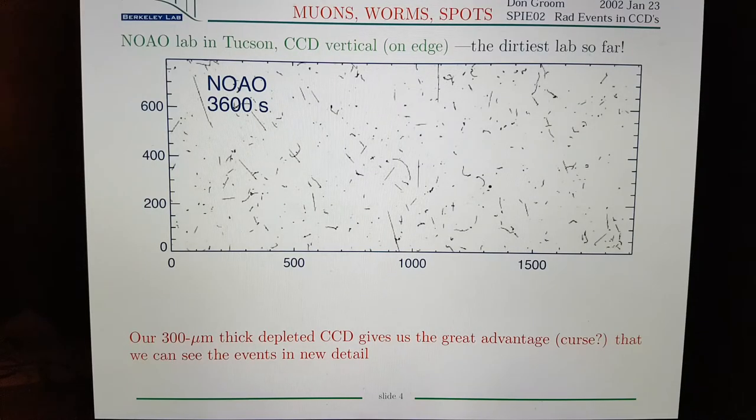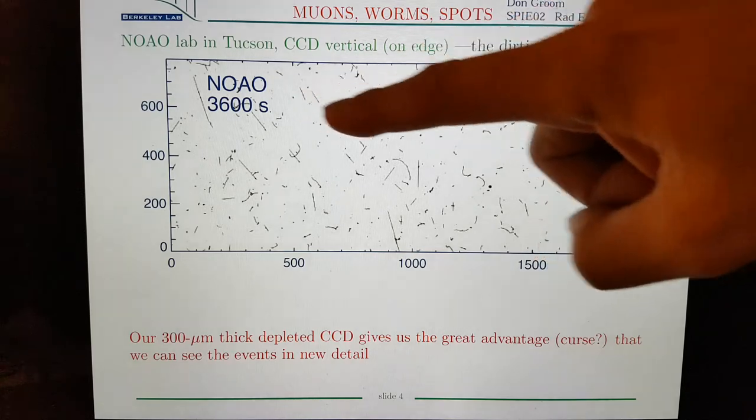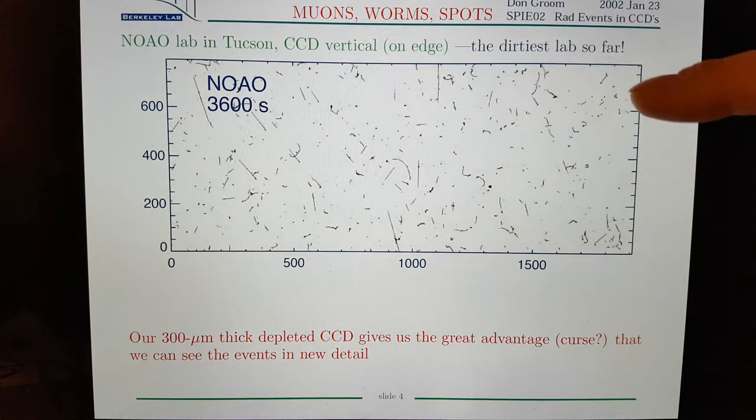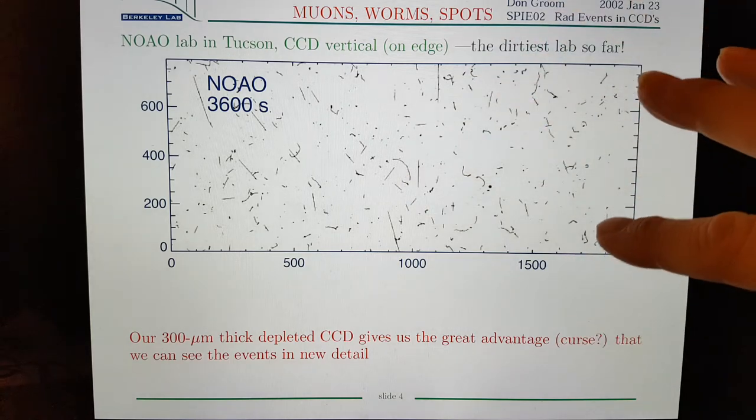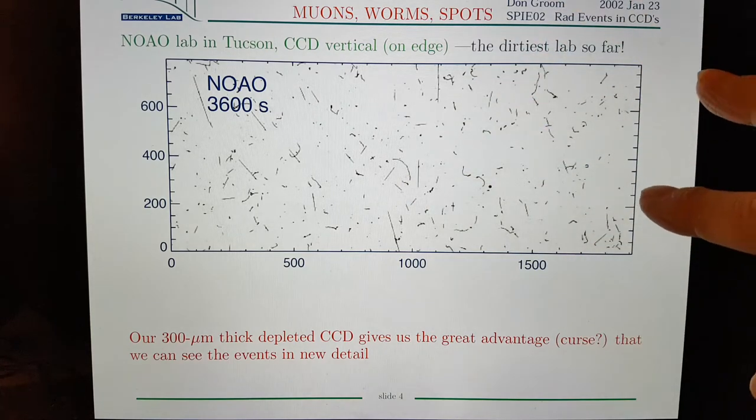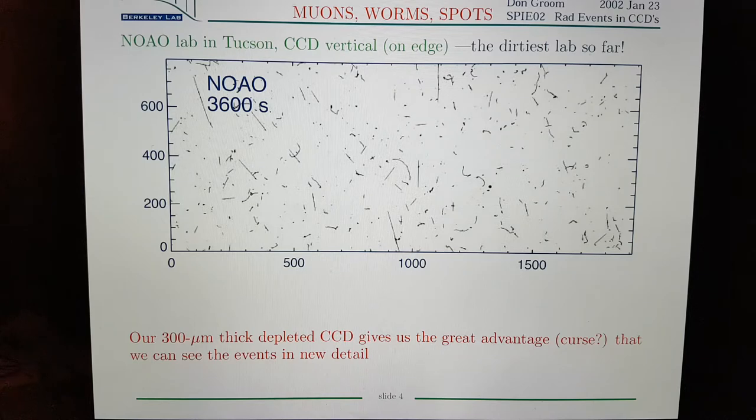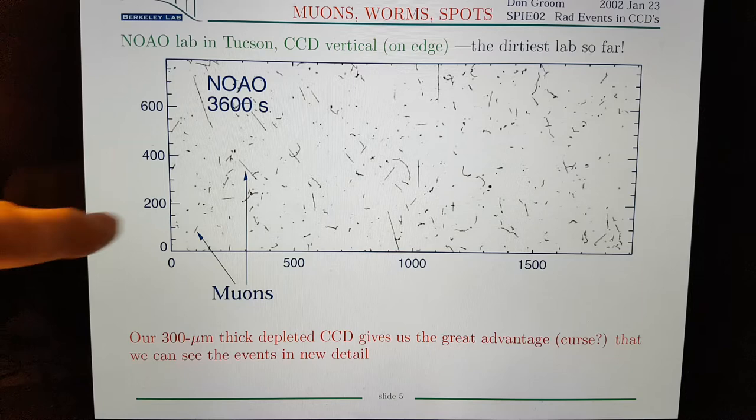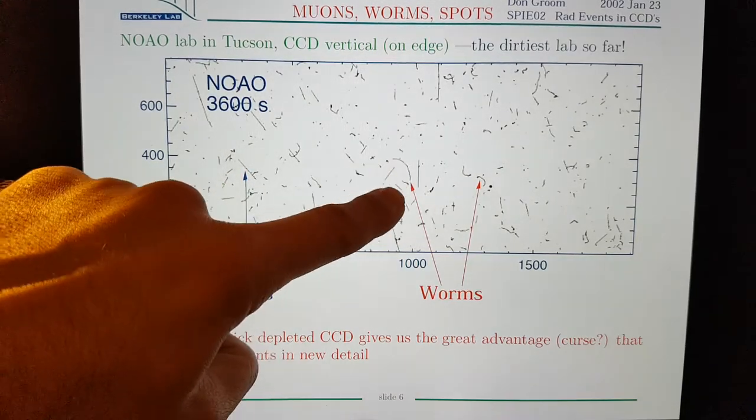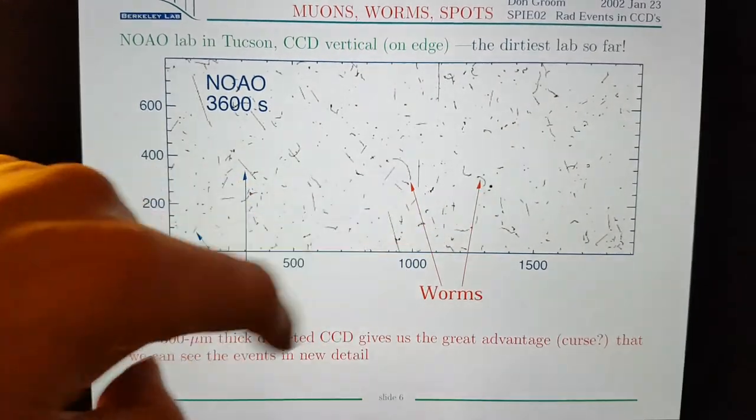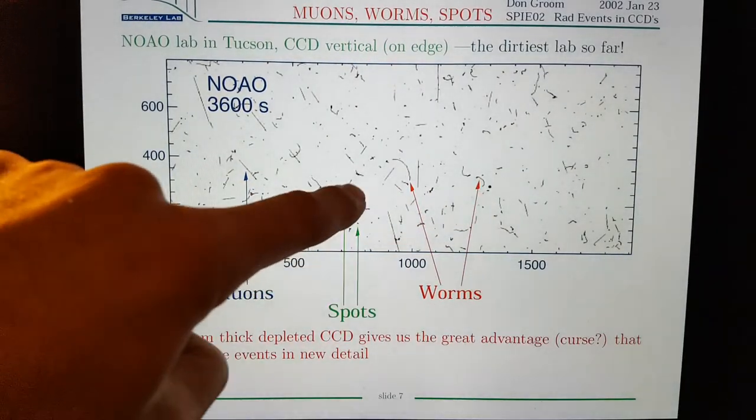In this slide, you can see output from the National Optical Astronomy Observatory, their detector, and there is a whole bunch of tracks from a long dark exposure on that. And this is in Tucson. And these over here, these straight tracks are muons. These are what they call worms, these squiggly ones. And these are what they call spots.